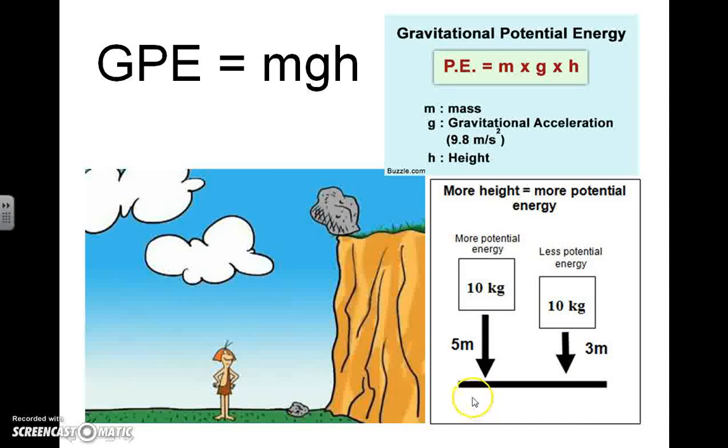So this object that's 5 meters above the ground weighing 10 kilograms, and this one over here only 3 meters above the ground also with a mass of 10 kilograms. So the one closer to the ground, the one with a lower height, is going to possess less gravitational potential energy.